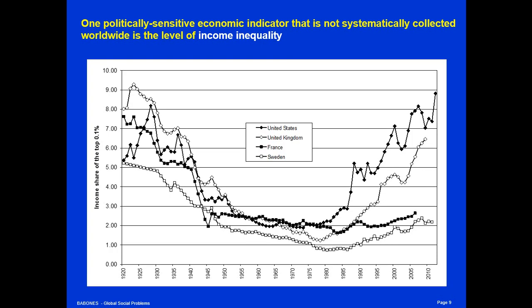One very interesting politically sensitive economic indicator that is simply not systematically collected is the level of inequality. This is a chart of income shares of the top 0.1% — the percent of income in four different countries that accrues to the top 0.1%, which is one of many indicators of inequality. These data actually come from the Thomas Piketty dataset, the World Top Incomes Database, from Thomas Piketty and his team in Paris. These data mostly come from national tax databases, which Piketty and his team have pulled together into an easily accessible online database that can be used across countries.